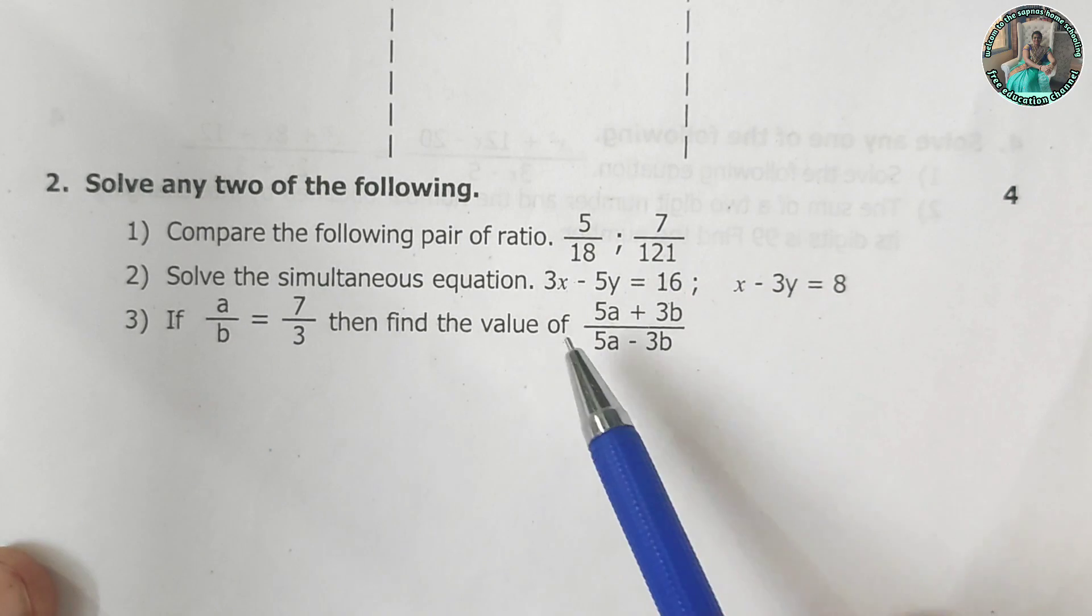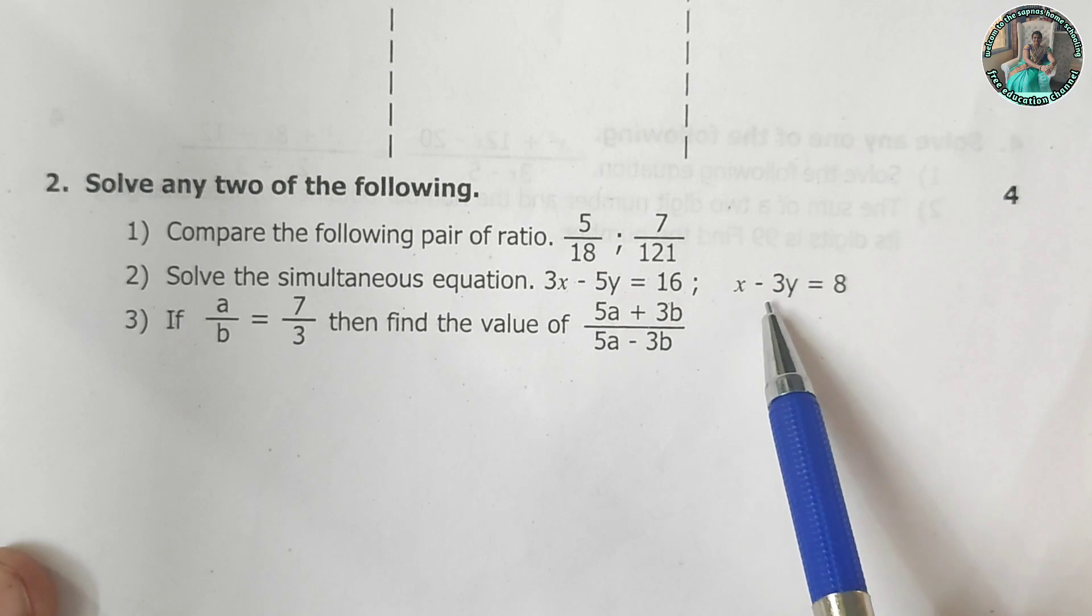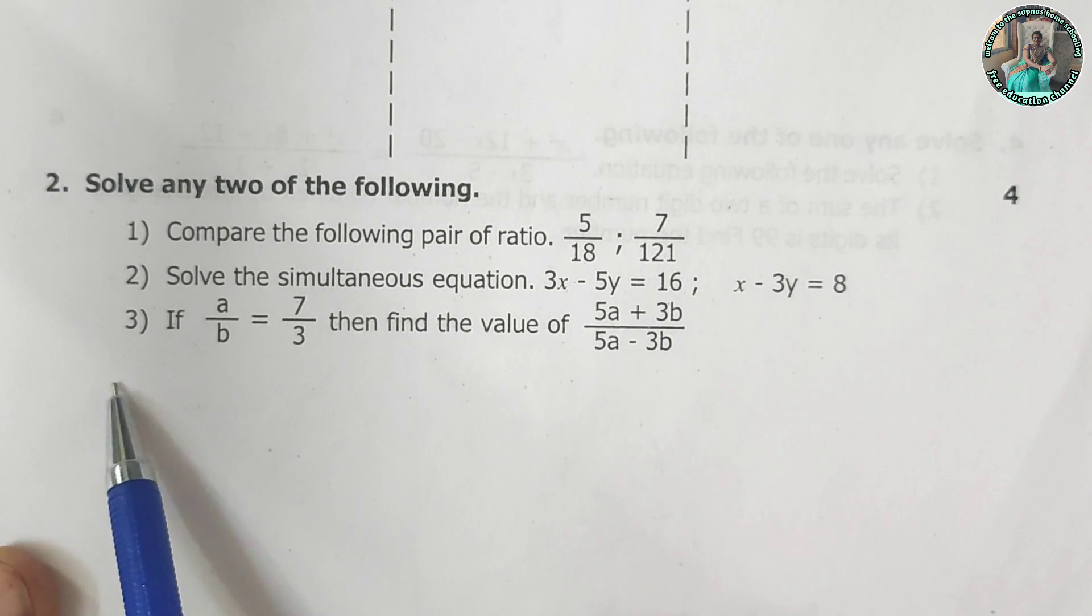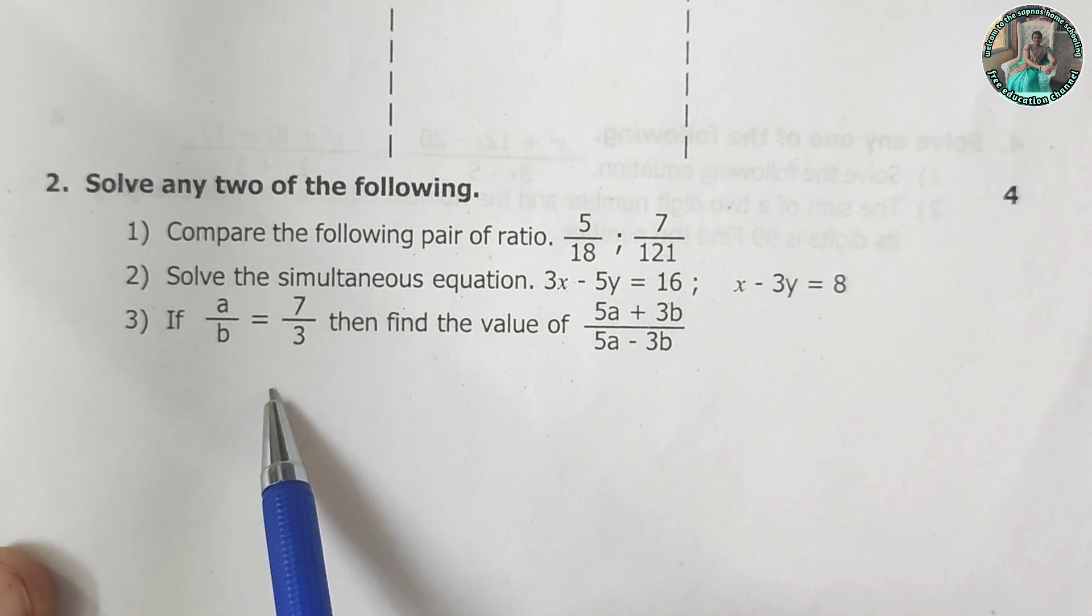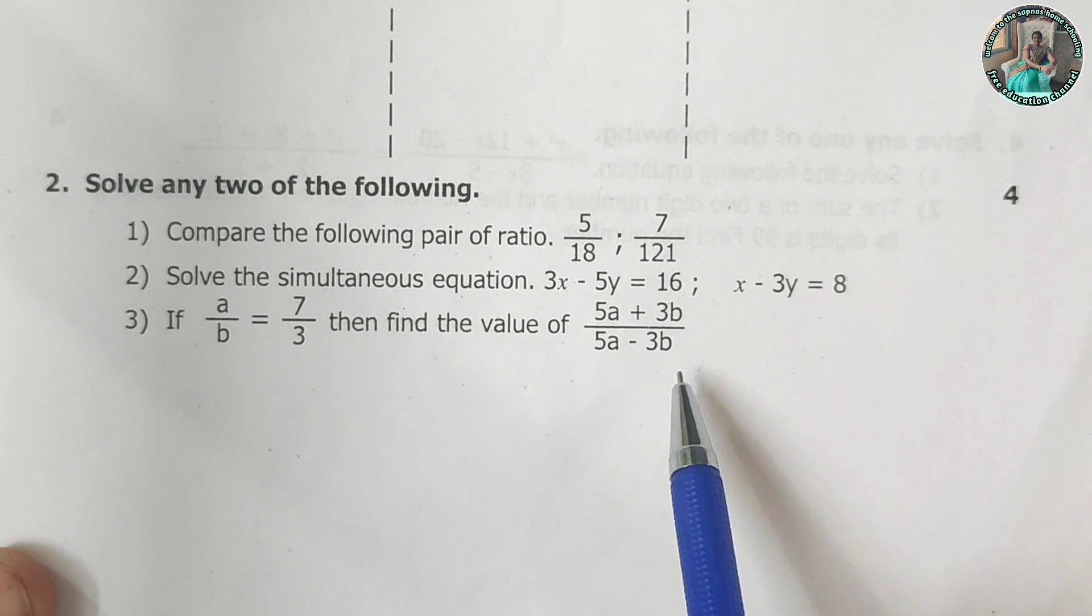Solve the simultaneous equation. 3x minus 5y is equal to 16 and x minus 3y is equal to 8. If a upon b is equal to 7 upon 3, then find the value of 5a plus 3b upon 5a minus 3b.